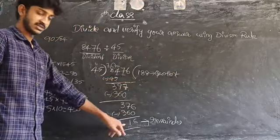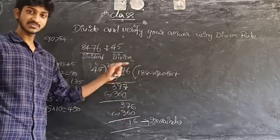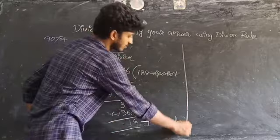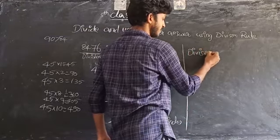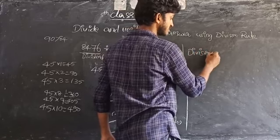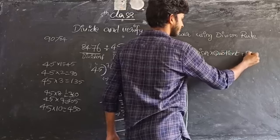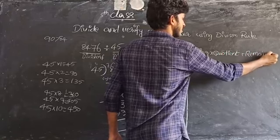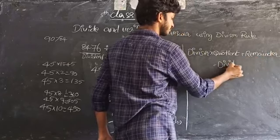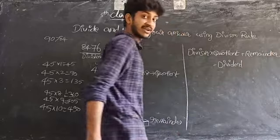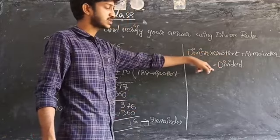So the answer is: remainder is 16 and quotient is 188. Now we have to verify these answers using the division rule. The division rule is: divisor into quotient plus remainder is equal to the dividend.